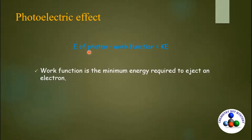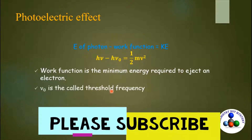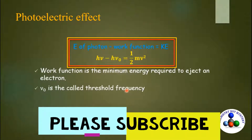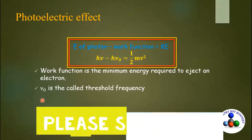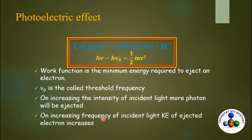You can write the energy of photon as hν and work function as hν₀. Half mv² is the kinetic energy, where ν₀ is the threshold frequency. To solve problems based on photoelectric effect, you just have to remember these two formulas and a few concepts: on increasing the intensity of incident light, more photons will be ejected, and on increasing the frequency, kinetic energy of the ejected electron increases.